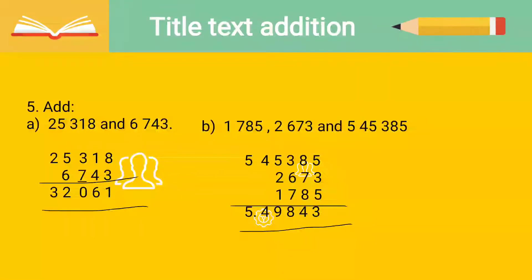Moving on to question five, part A: they have given us 25,318 and 6,743 to add. First we write 25,318, then we write 6,743. Then we add both. Eight plus three is eleven — one carried forward. Four plus one is five, plus one is six. Seven plus three is ten — one carry. Six plus five is eleven, plus one is twelve. And two plus one is three. So the final answer is 32,061.